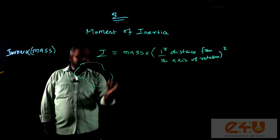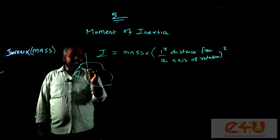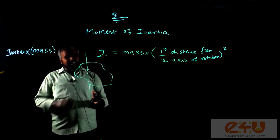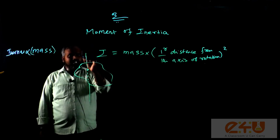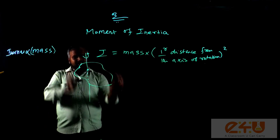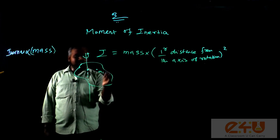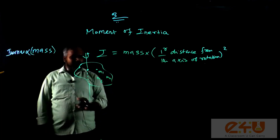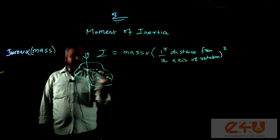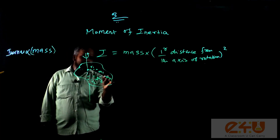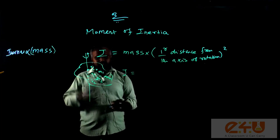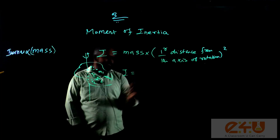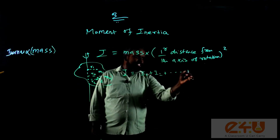Consider an arbitrary shape of a rigid body with an imaginary fixed axis passing through it — it may lie inside or outside the body. Let the rigid body contain n number of particles of masses m1, m2, ... mn at different positions from the axis of rotation, with perpendicular distances r1, r2, ... rn respectively. The total moment of inertia is the sum of the individual moment of inertia: I1, I2, ... In.